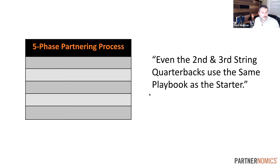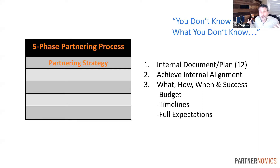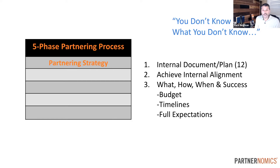The five-phase partnering process starts off with strategy. Our methodology says you start with an internal document — we call it the SPP, the Strategic Partnering Plan. It's a 12-component document, and the sole intent is to get everybody on the same page internally.